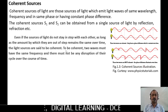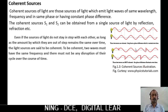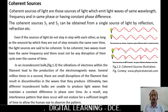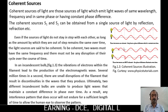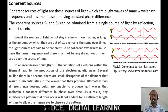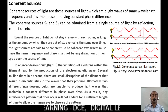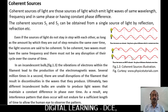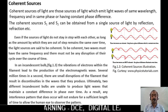To be coherent, two waves must have the same frequency, and there must not be any disruption of their cycle over the course of time. In an incandescent bulb, the vibrations of electrons within the filament lead to the production of electromagnetic waves. Several million times a second, there are small disruptions of the filament that result in discontinuities in the waves they produce. As a result, two different incandescent bulbs are unable to produce light waves that maintain a constant phase difference over time, and any interference pattern that occurs will not endure long enough for the human eye to observe it.